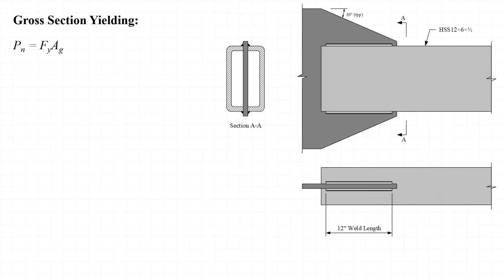The first strength limit that we'll investigate is gross section yielding, and in this case, the nominal strength, P sub n, is taken as a product of F sub y and A sub g, the yield stress of the material and the gross area of the cross section.